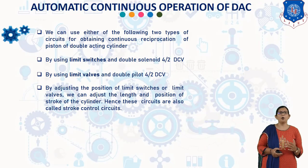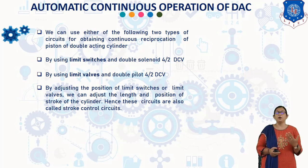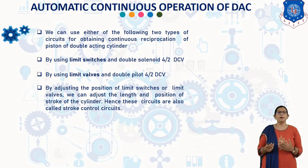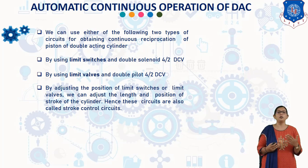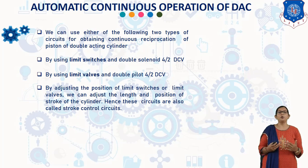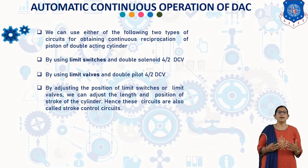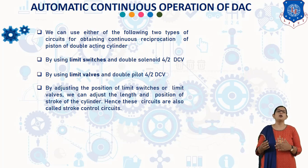Now we will discuss the automatic continuous operation of a double acting cylinder, generally known as DAC. We can use either of the following two types of circuit for obtaining continuous reciprocation: first, by using a limit switch and double solenoid 4/2 DCV; second, by using a limit valve and double pilot 4/2 DCV. By adjusting the distance of limit switches, we can also adjust the length and position of the stroke of the cylinder. Hence, these circuits are also known as stroke control circuits.